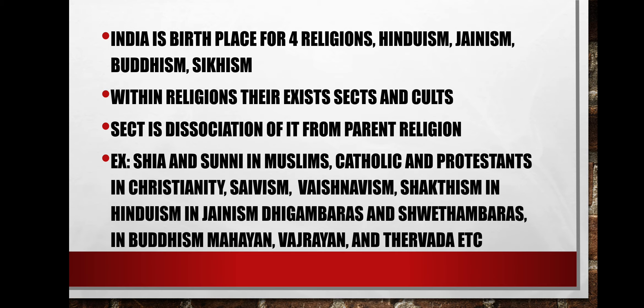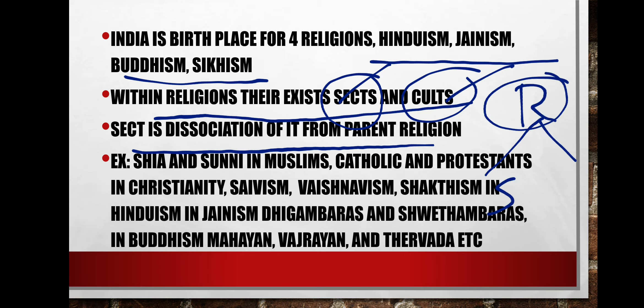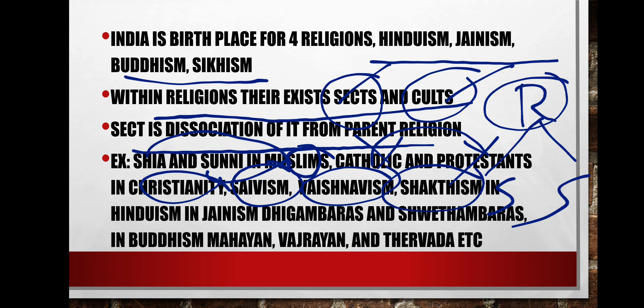India is the birthplace of four religions: Hinduism, Jainism, Buddhism, and Sikhism. Other religions present in India came through migration. Within religions there exist sects and cults. A sect is a dissociation from the parent religion. For example, Islam is divided into Shias and Sunnis; Christianity into Catholics and Protestants; Hinduism into Saivism, Vaishnavism, and Shaktism; Jainism into Digambaras and Shwetambaras; and Buddhism into Mahayana, Vajrayana, and Theravada.